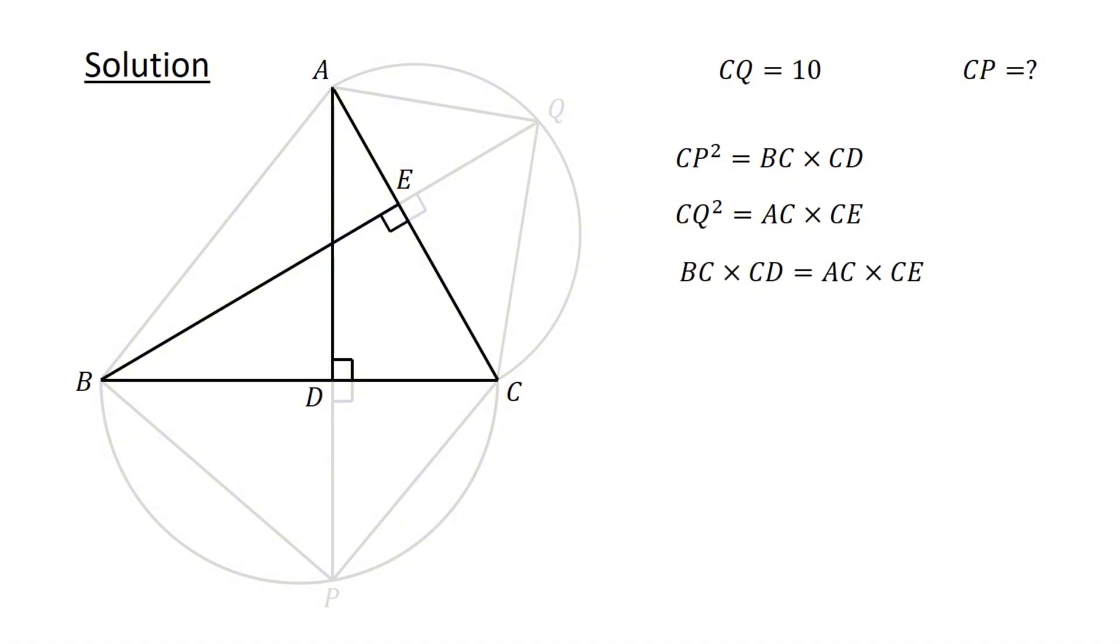Combining with earlier results, we thus have CP squared equals CQ squared. Or, after taking the square root, CP equals CQ. Given that CQ equals 10 units, therefore, CP also equals 10 units, which is the solution to our problem.